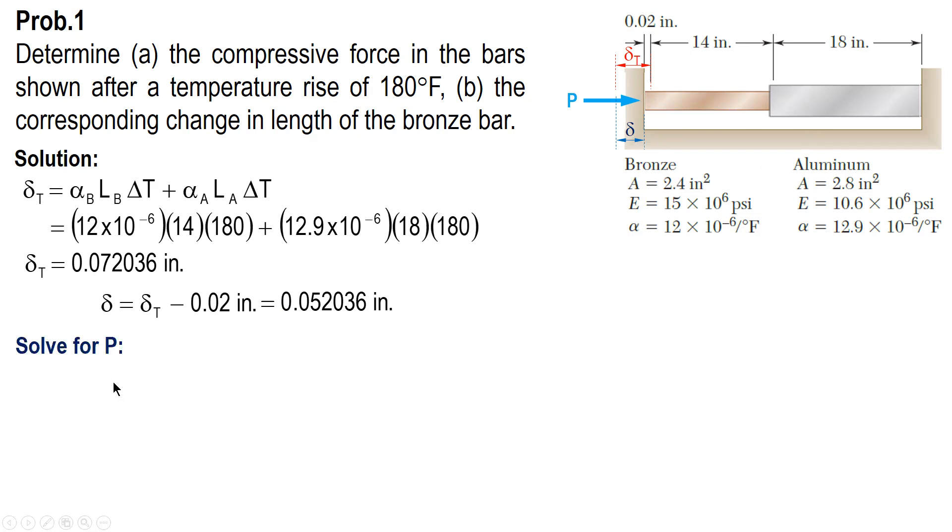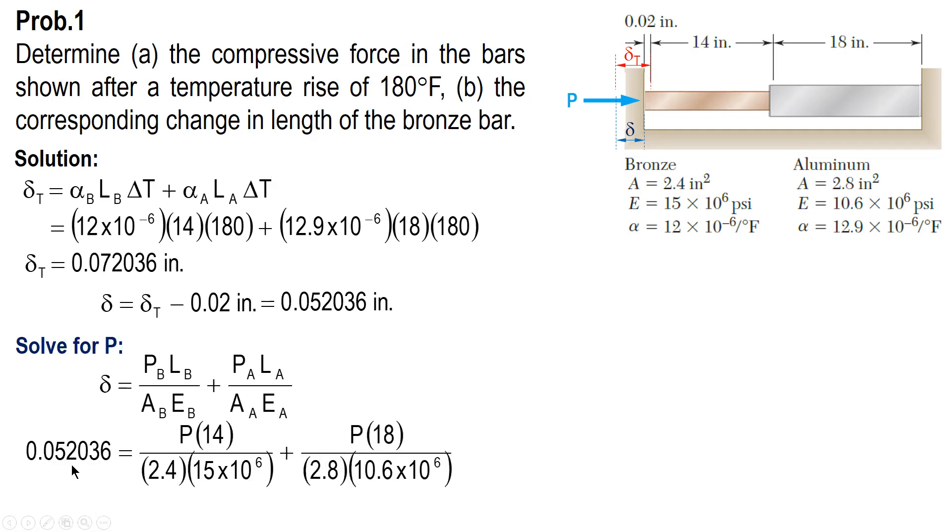Solving for P, we have this one. The total shortening of bronze and aluminum. Be consistent with the units. The unit of delta is inches.